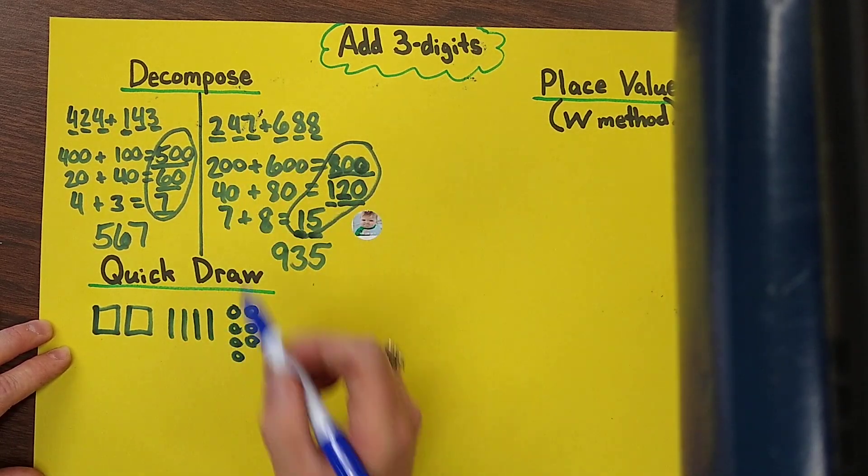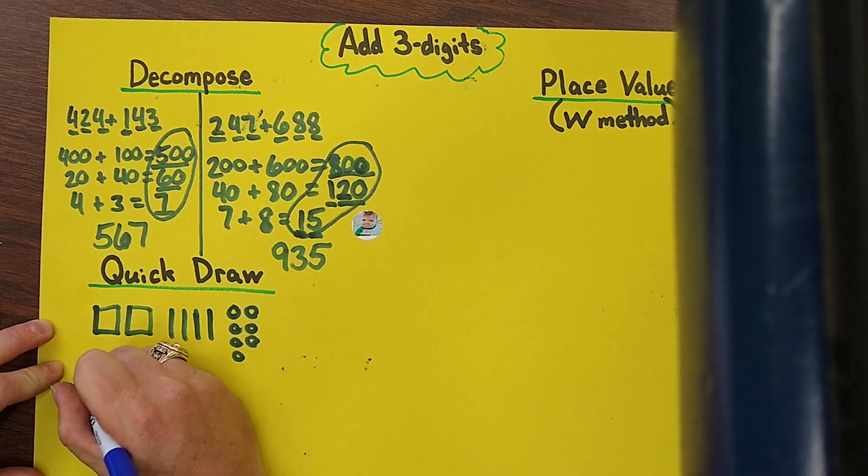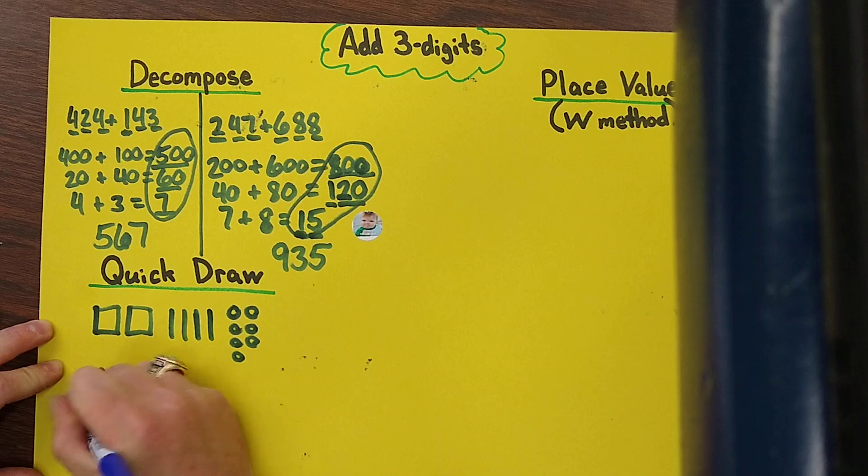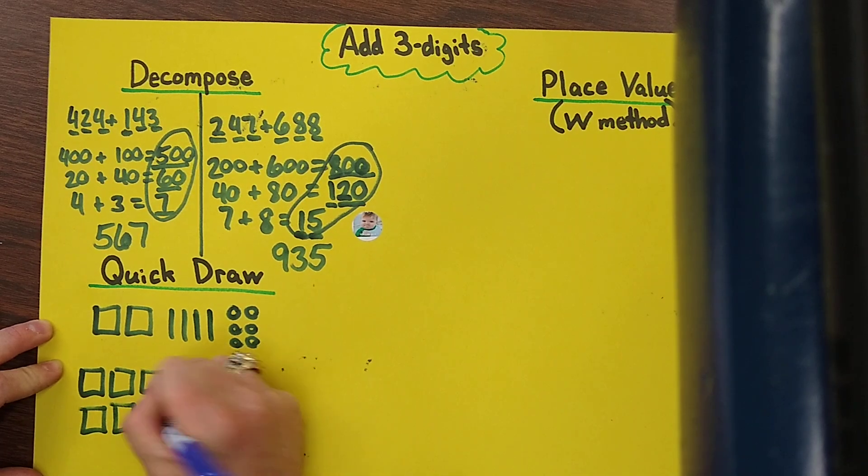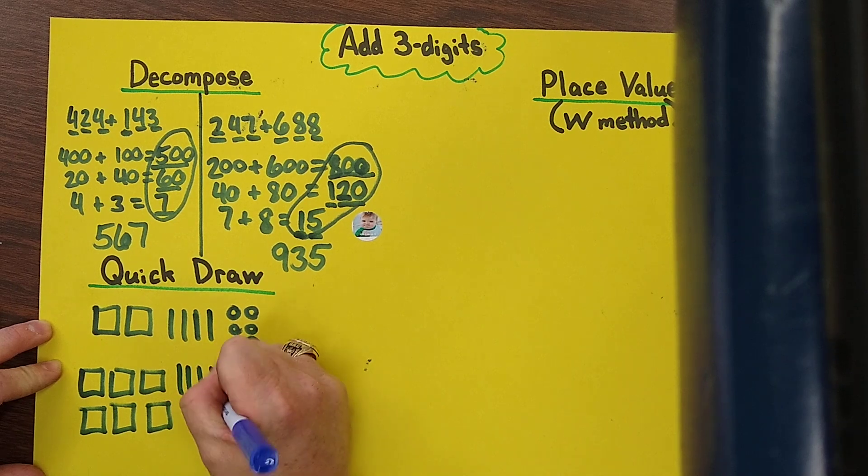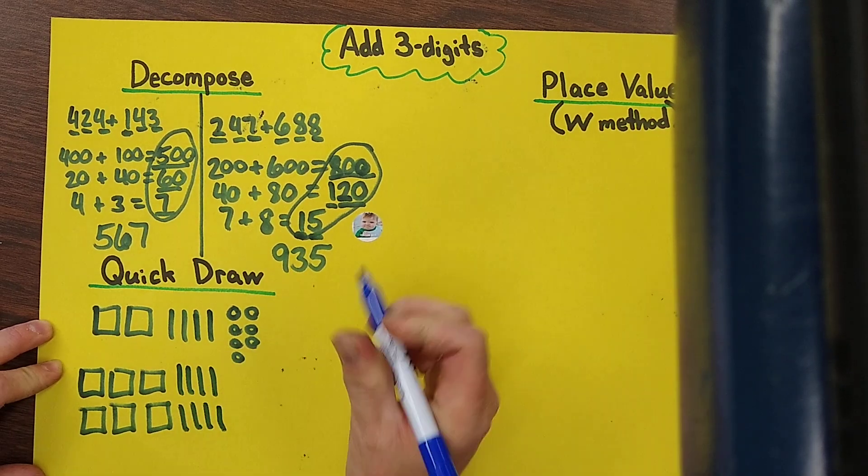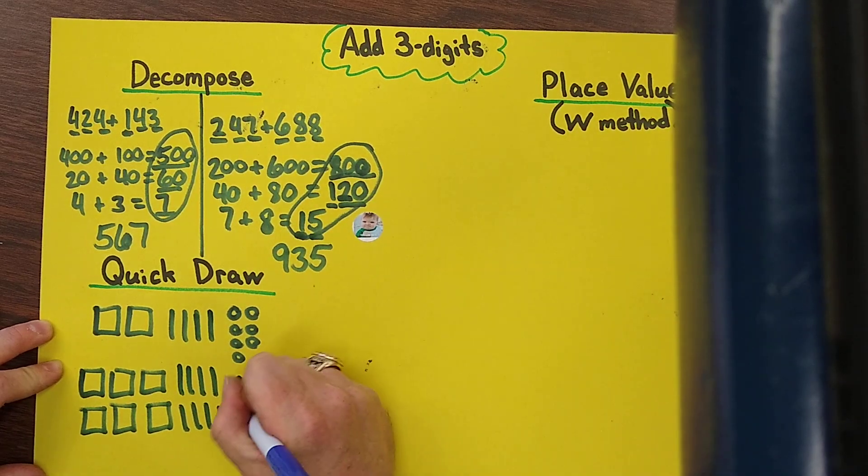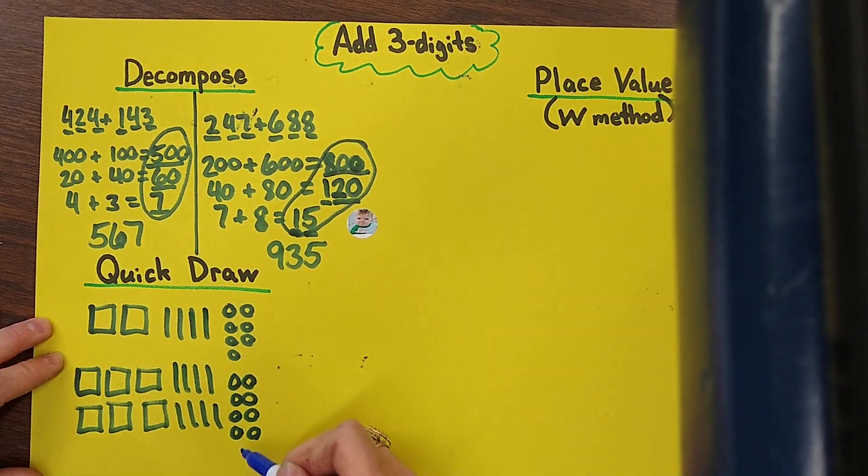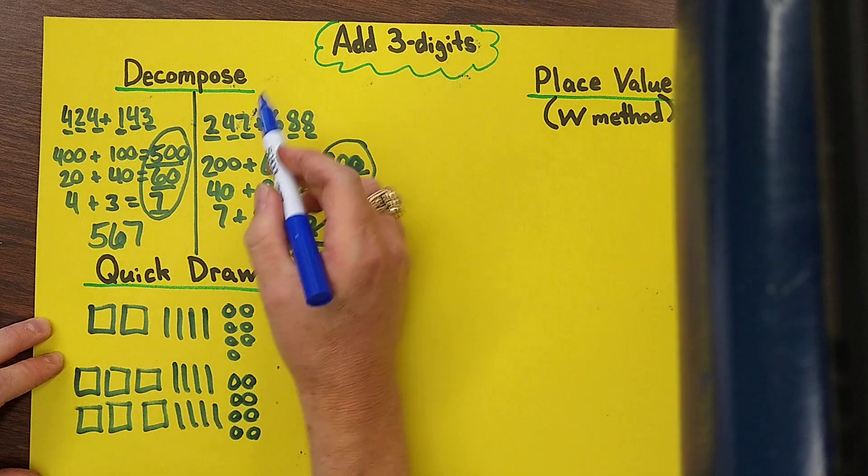Now we just drew out the first number, let's draw 688. One, two, three, four, five, and six. 80, well got a lot to draw here: 10, 20, 30, 40, 50, 60, 70, 80, and 8 ones: 1, 2, 3, 4, 5, 6, 7, 8.